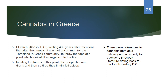Plutarch, writing around 46 to 127 BCE — about 400 years after Homer — mentions that after their meals it was not uncommon for the Thracians, a Greek community, to throw the tops of plants onto a fire. According to Plutarch, it looked like oregano; you inhaled the fumes, the people became drunk and then so tired they finally fell asleep. It wasn't oregano — it was cannabis, and it became a great way to get a good night's sleep. There were also references to cannabis as both a delicacy and a remedy for backache in Greek literature dating to the 4th century BCE.